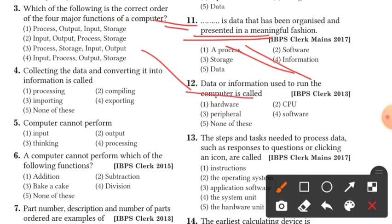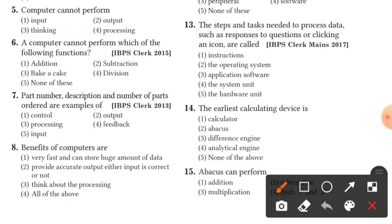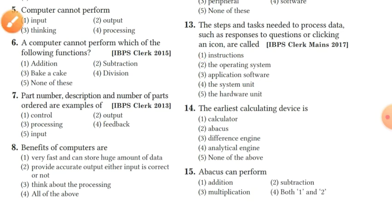Question 12: data or information used to run the computer — the answer is none of these. Hardware, CPU, peripheral, software — none of these is the right answer. Question 13: the steps and tasks needed to process data, such as responses to questions or clicking an icon, are called instructions. Instructions is the right answer.